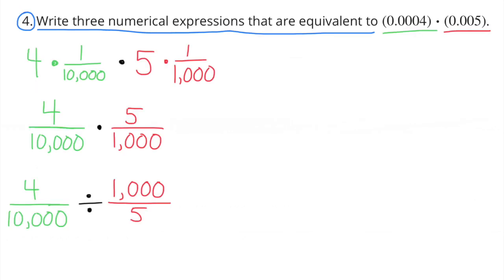Number four: Write three numerical expressions equivalent to four ten-thousandths times five-thousandths. First: four times one over ten-thousand, times five times one over one-thousand. Second: four over ten-thousand times five over one-thousand, which can also be read as four ten-thousandths times five-thousandths. Third: four ten-thousandths divided by one-thousand-fifths.